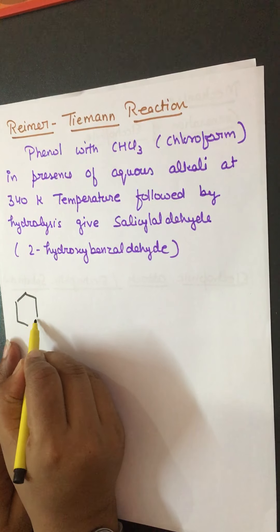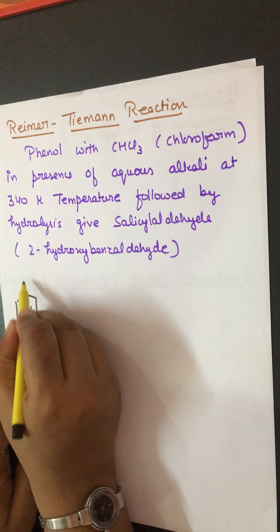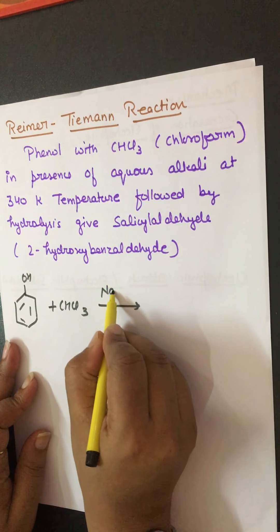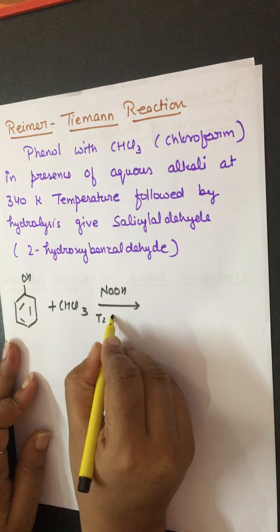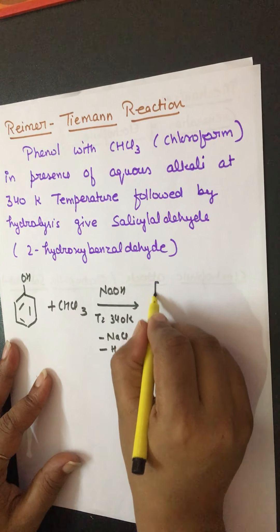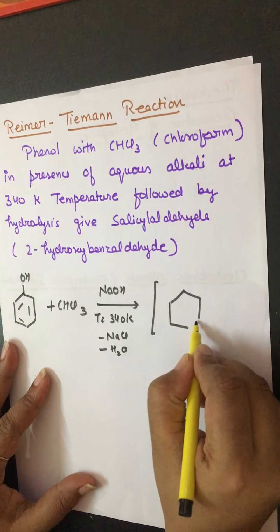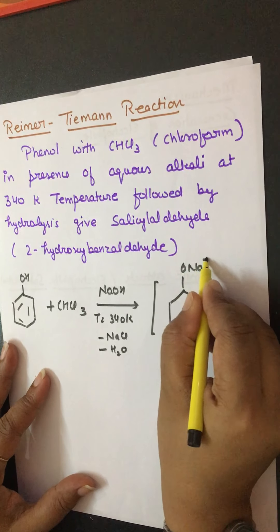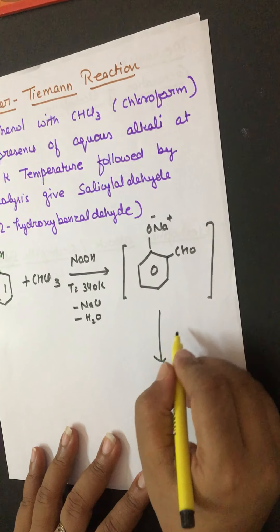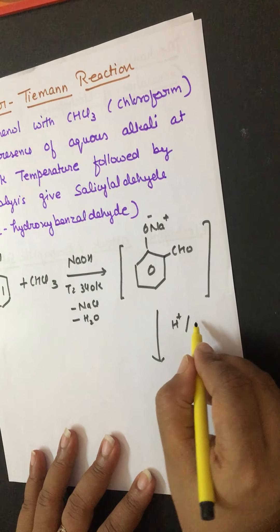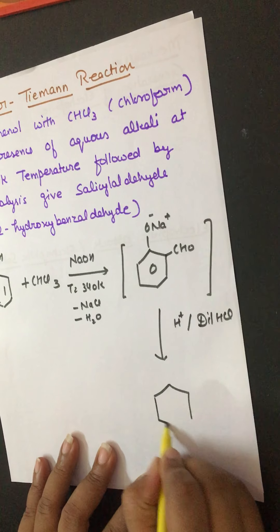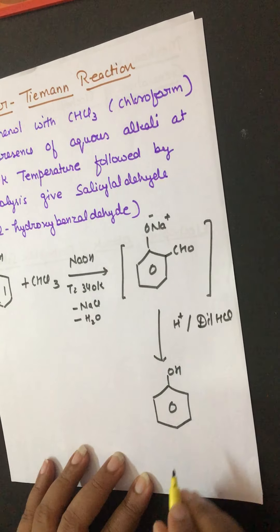Salicylaldehyde is 2-hydroxybenzaldehyde, which is the major product. How? Phenol reacts with chloroform, CHCl3, in presence of aqueous alkali NaOH at 340 Kelvin. In this case, water is removed out, NaCl is removed out, H2O is removed out, and it gives out an intermediate.